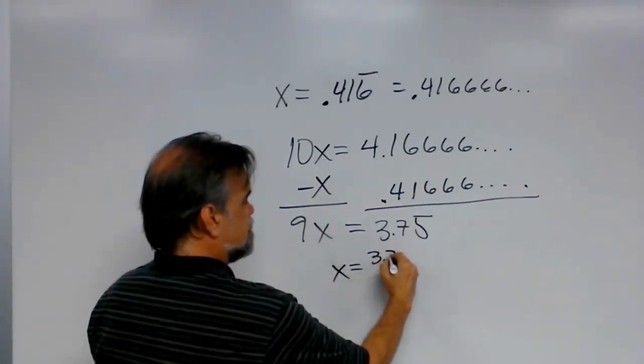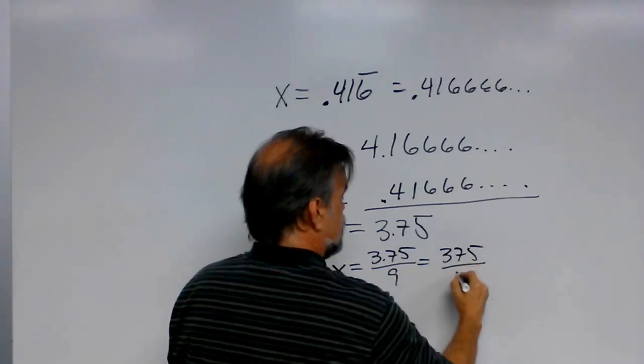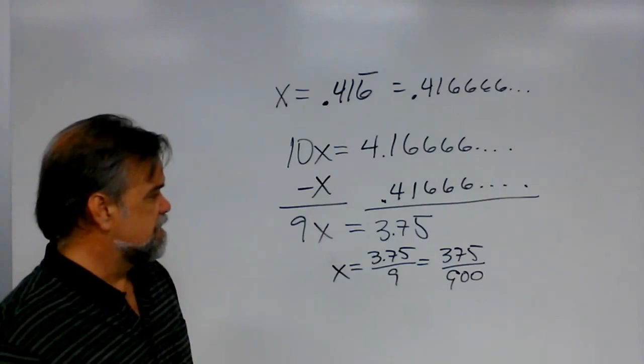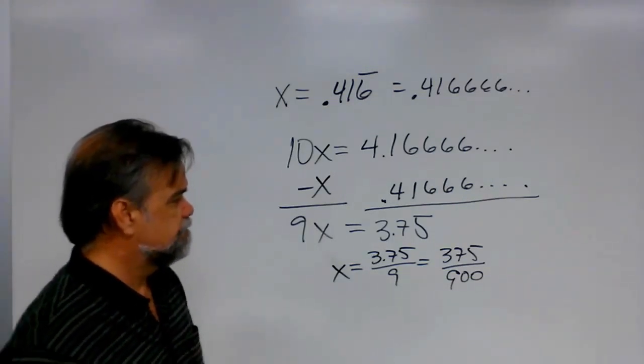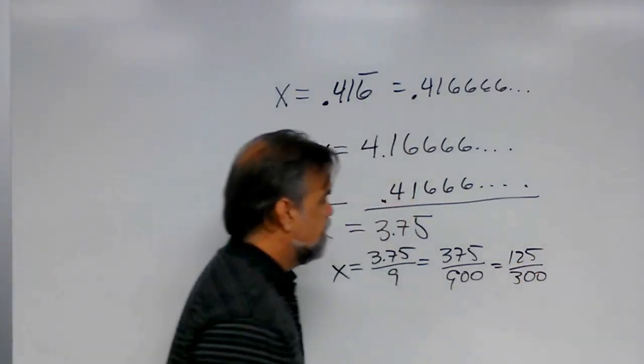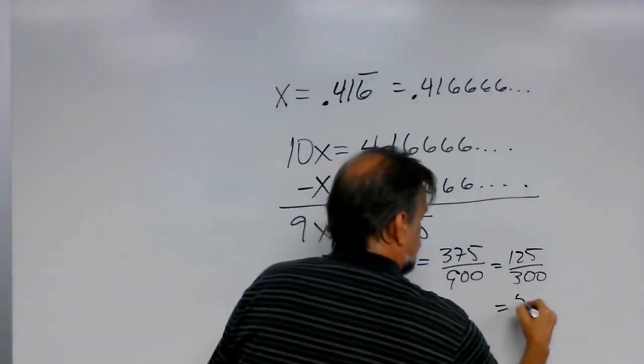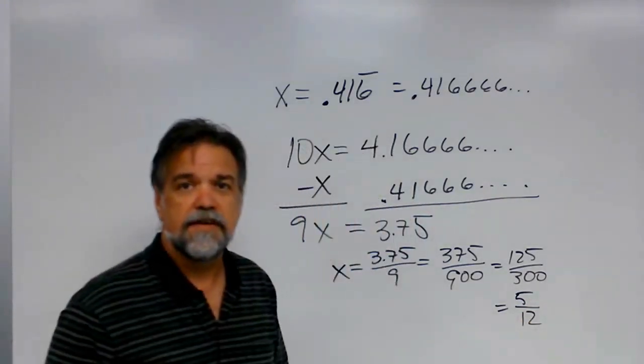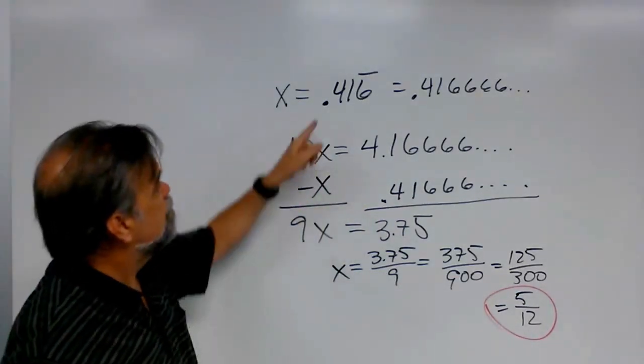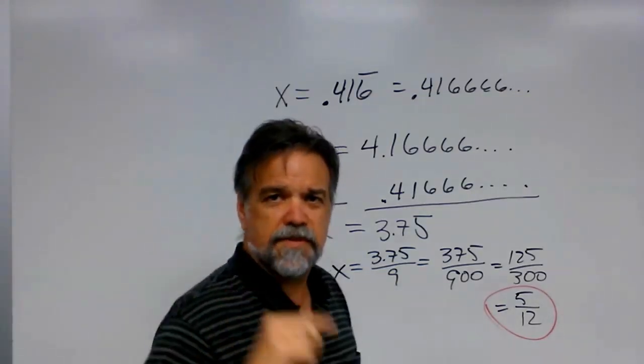So that means x equals 3.75 divided by 9, which is the same thing as 375 over 900. And, oh, man. Let's see. If I divide that by 3, I would get 125 over 300. And if I divide that by 25, I get 5 over 12. And that's exactly what my answer is, 5 twelfths. So, 0.416 bar equals 5 twelfths. I think you're starting to get the hang of this.